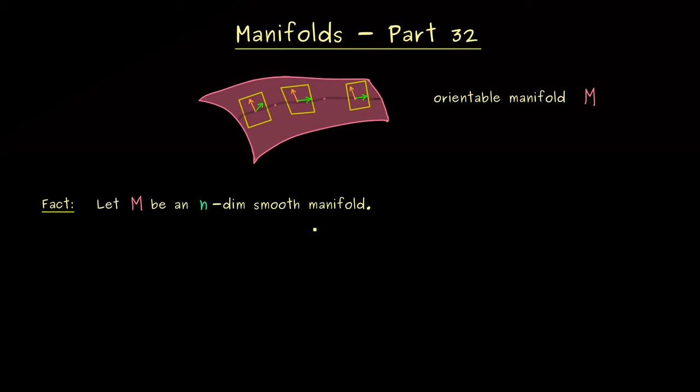And now the assumption we need here is that M is an n-dimensional smooth manifold. So indeed, the same as always, but now we are able to write down three equivalent claims. And the first one, of course, should be that M is orientable.